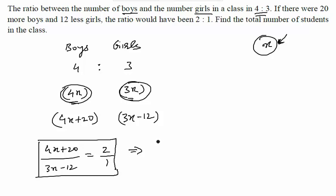Let us cross multiply. What will we get? We will get 4x plus 20 is equal to 6x minus 24. On further manipulation, we will get 44 is equal to 2x, which means x is equal to 22.